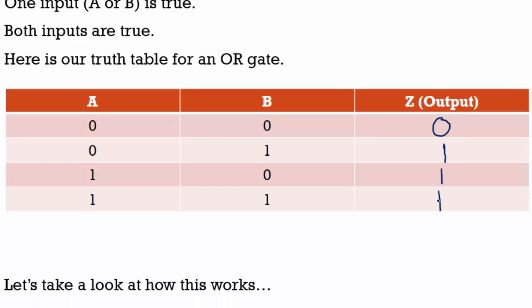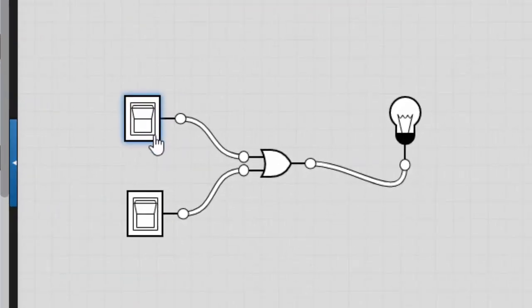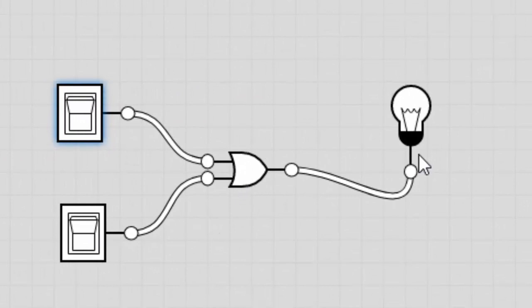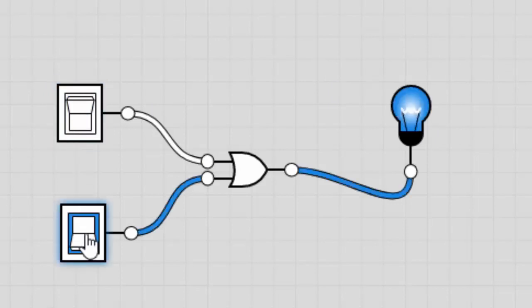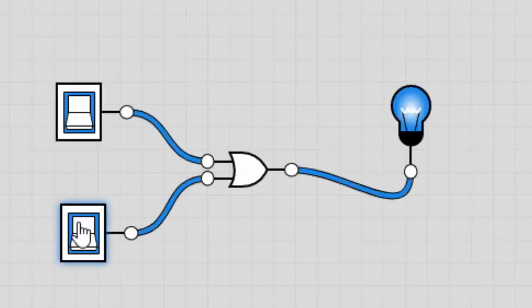Let's see how this works. I have my two inputs with an OR gate still attached to the light bulb. Both of them are off — A and B are both zero — so the light bulb is not lighting up. There are three instances where the light bulb should light up. First, when A is on and B is off, the light bulb lights up. Second, when A is off and B is on, it lights up as well. Third, when both A and B are on, it should also light up — and it does.